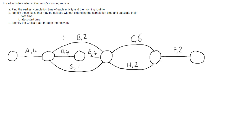In this video I'm looking at a question about activity networks, working out the earliest completion time for each activity - where our activities are A, B, C, G, and so forth - and for the entire morning routine. This is Cameron's morning routine, so the morning routine is our project, and we want the earliest completion time of that project.